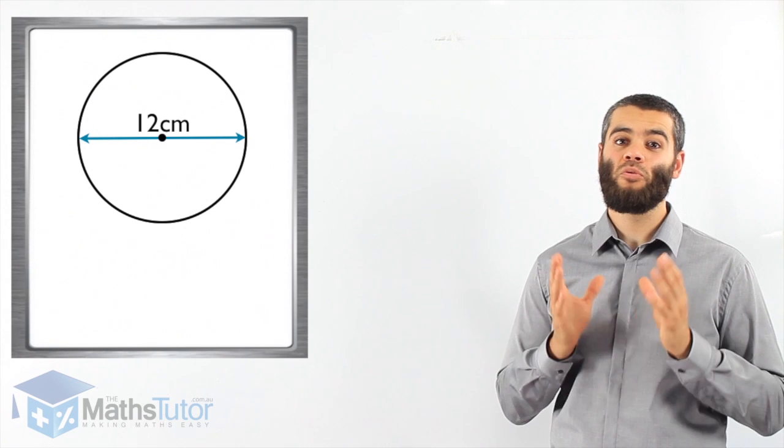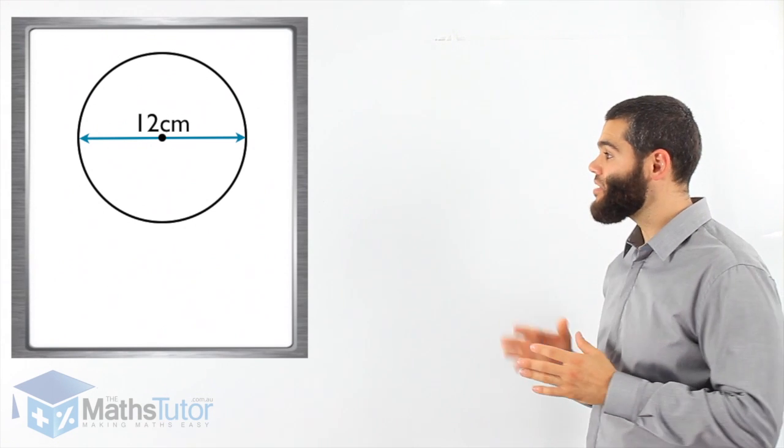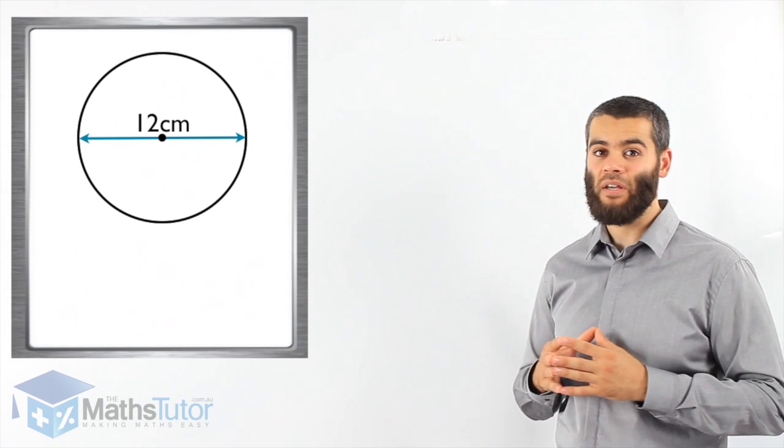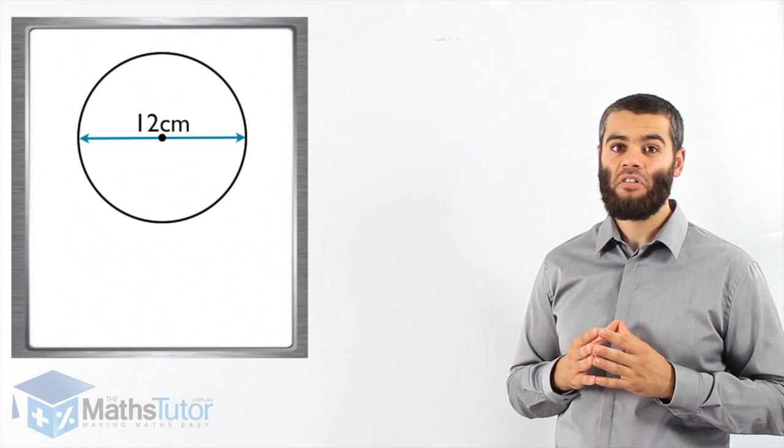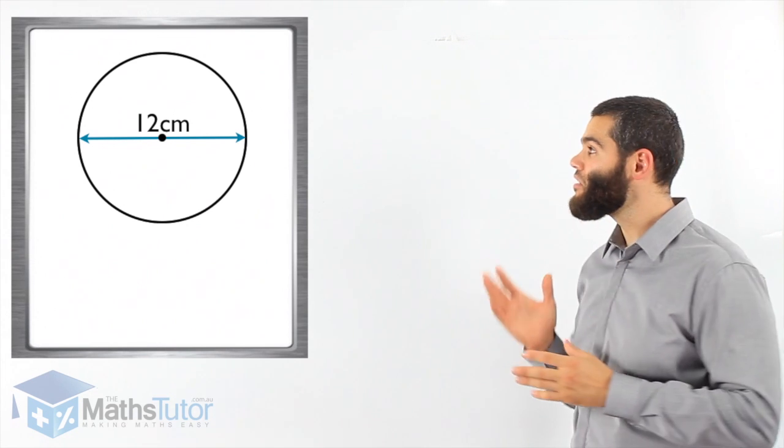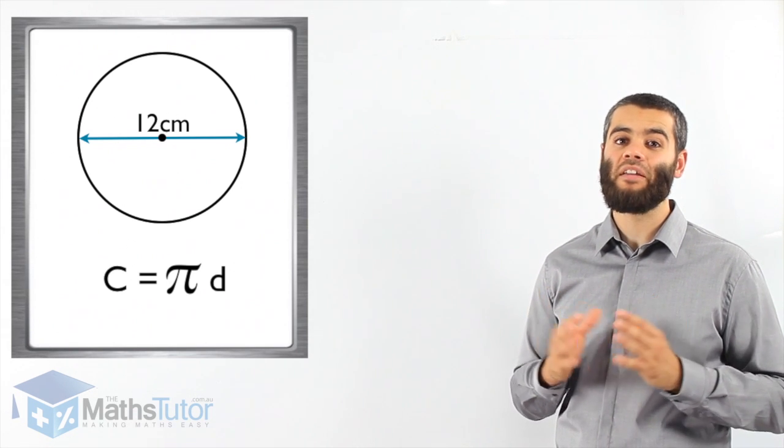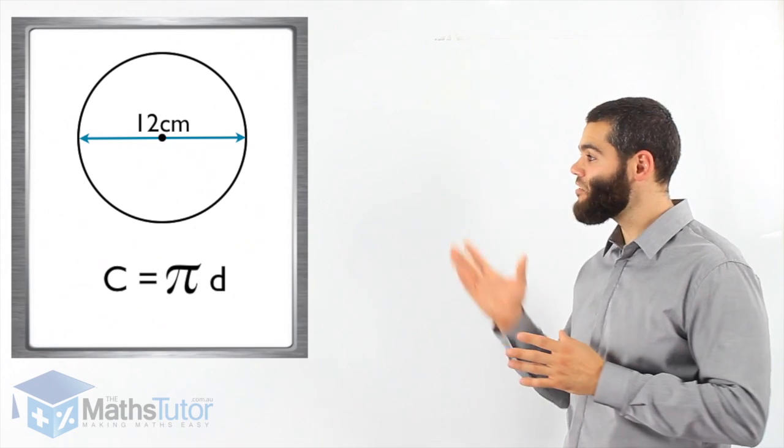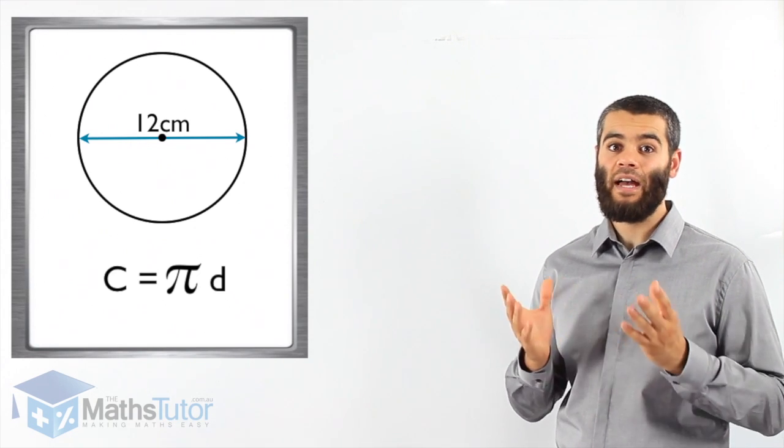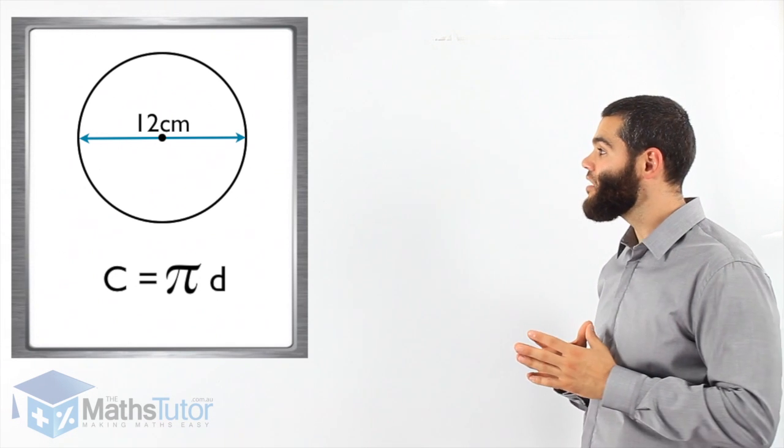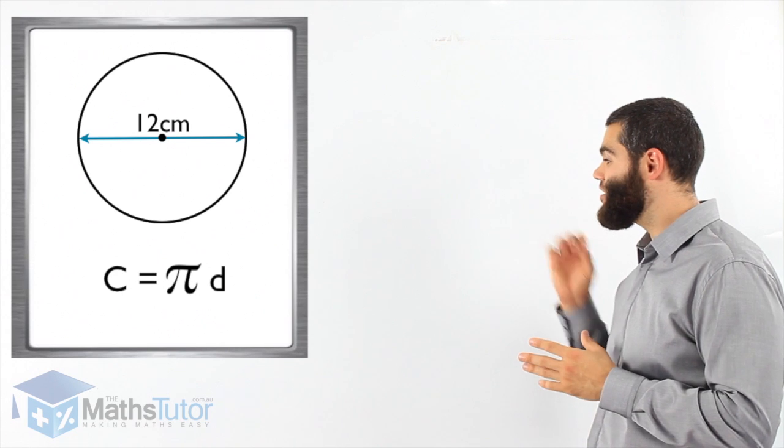The diameter here is 12 centimeters. We said we can use C equals 2πr or C equals πd. We are now going to use C equals πd. Why πd? Because we have the diameter. We have the diameter, which means C equals πd. Let's do the working out.